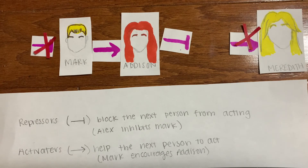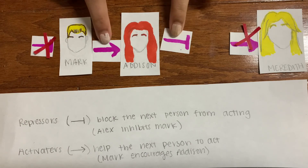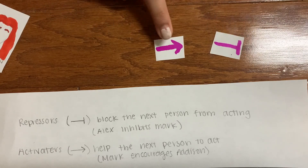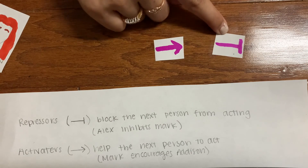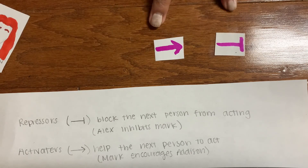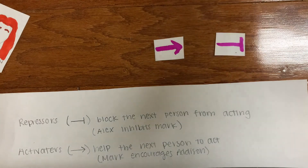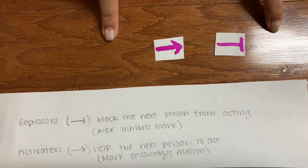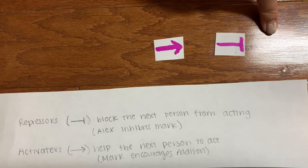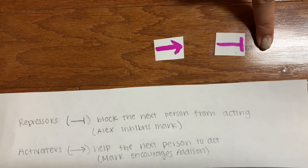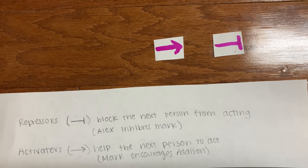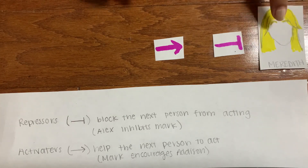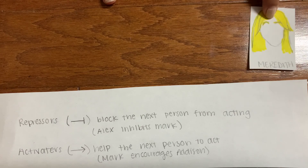Repressors and activators from these symbols work to either activate or block the transcription of the next gene. Without pieces of the chain, the next gene cannot be transcribed or cannot be blocked. That, overall, affects whether the final gene can be transcribed.